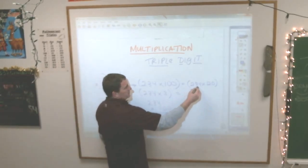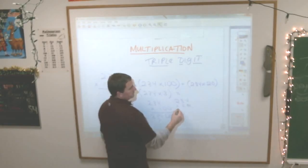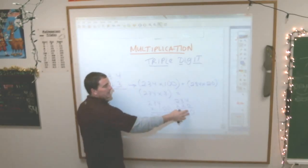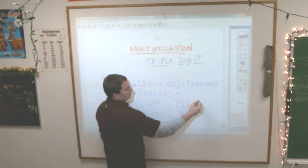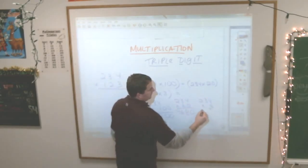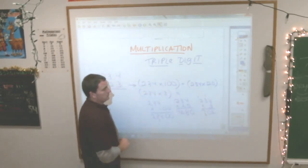What is 234 times 20? Bring down my 0, 8, 6, 4. I get 4,680. And what is 234 times 3? 3 times 4 is 12, 9, 10, 0, 6, 7. I get 702.